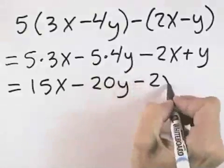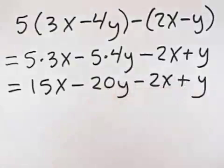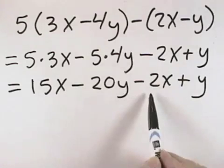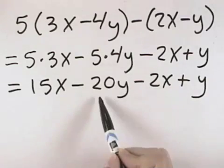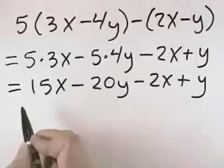Then we have minus 2x and plus y. The commutative property allows us to regroup so that we can put the 15x and the negative 2x together, and put the negative 20y and the positive 1y together.